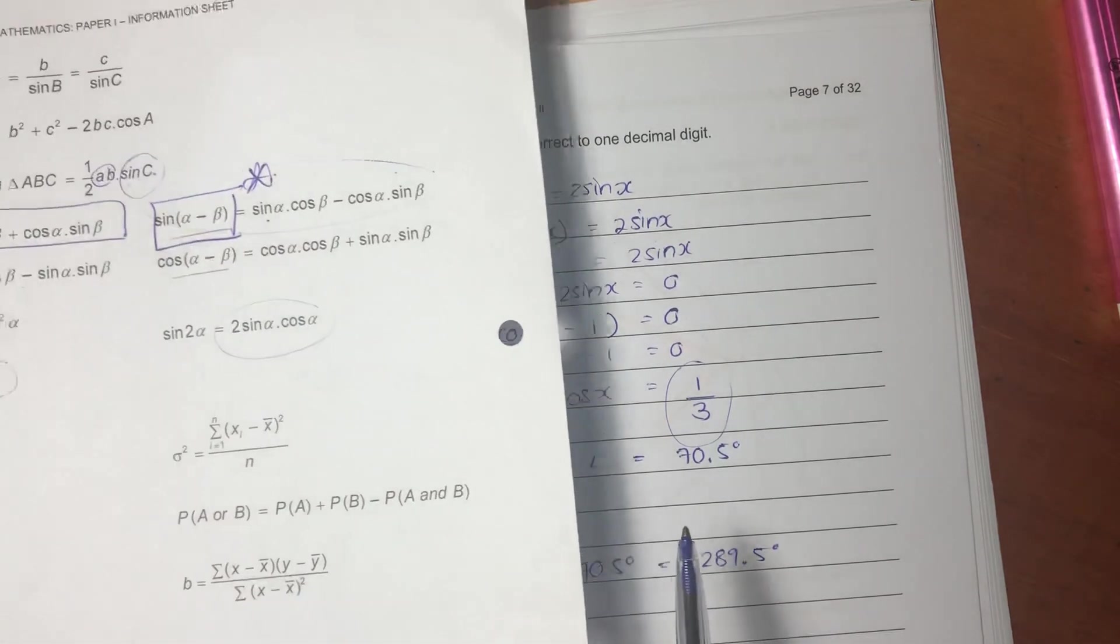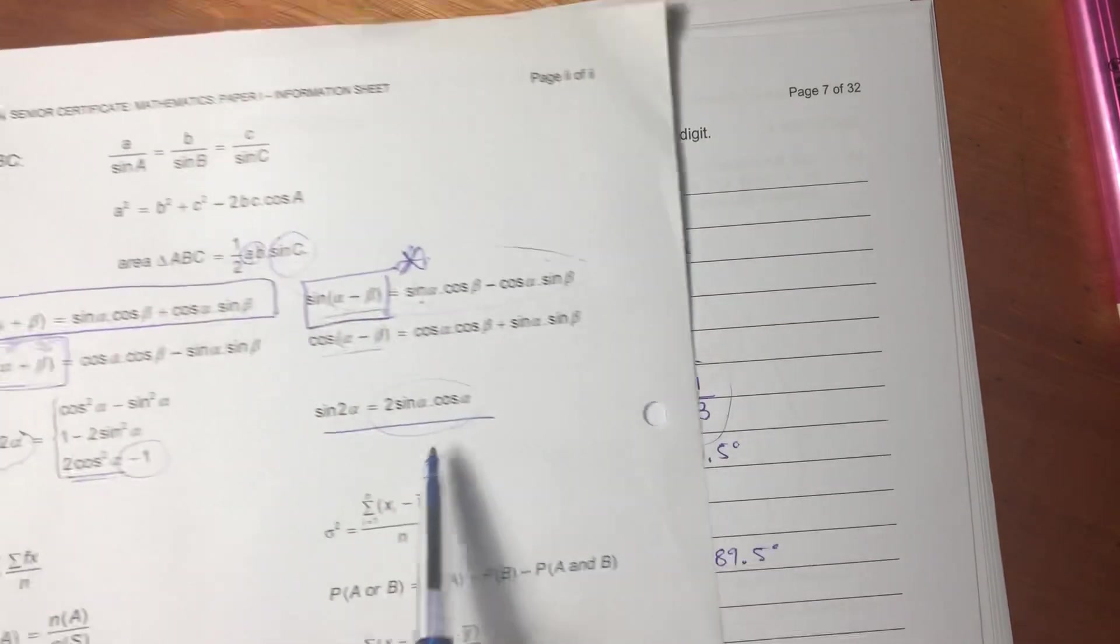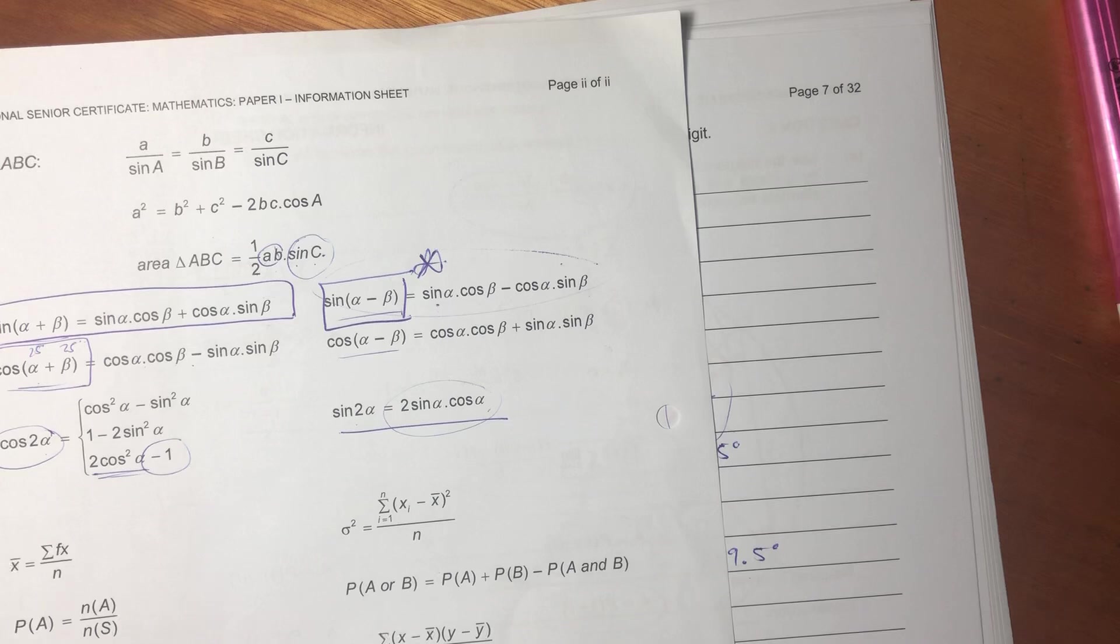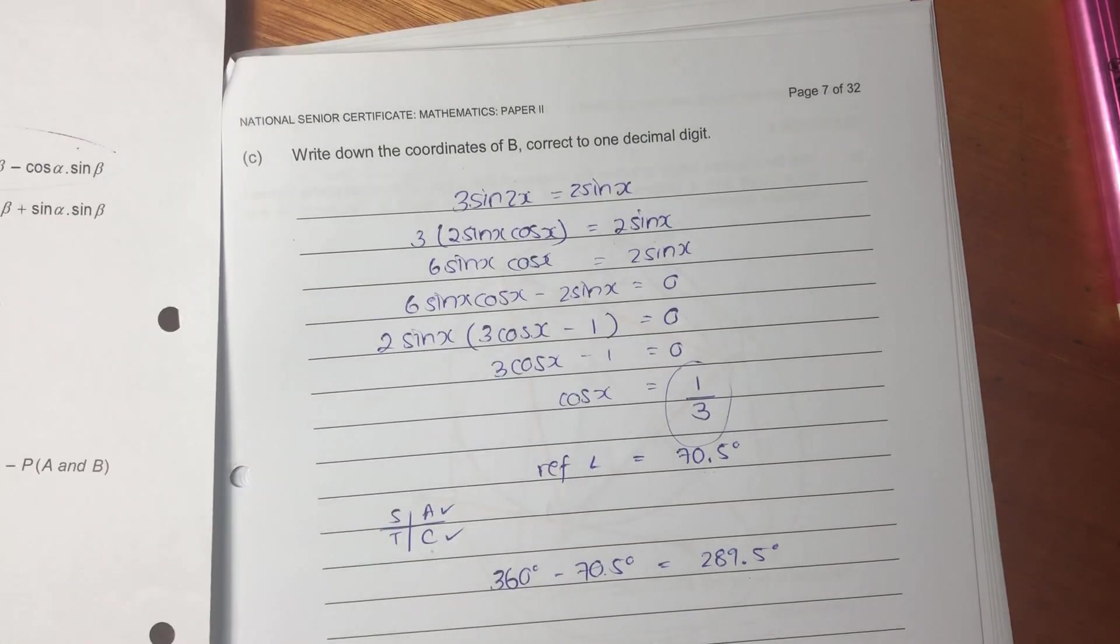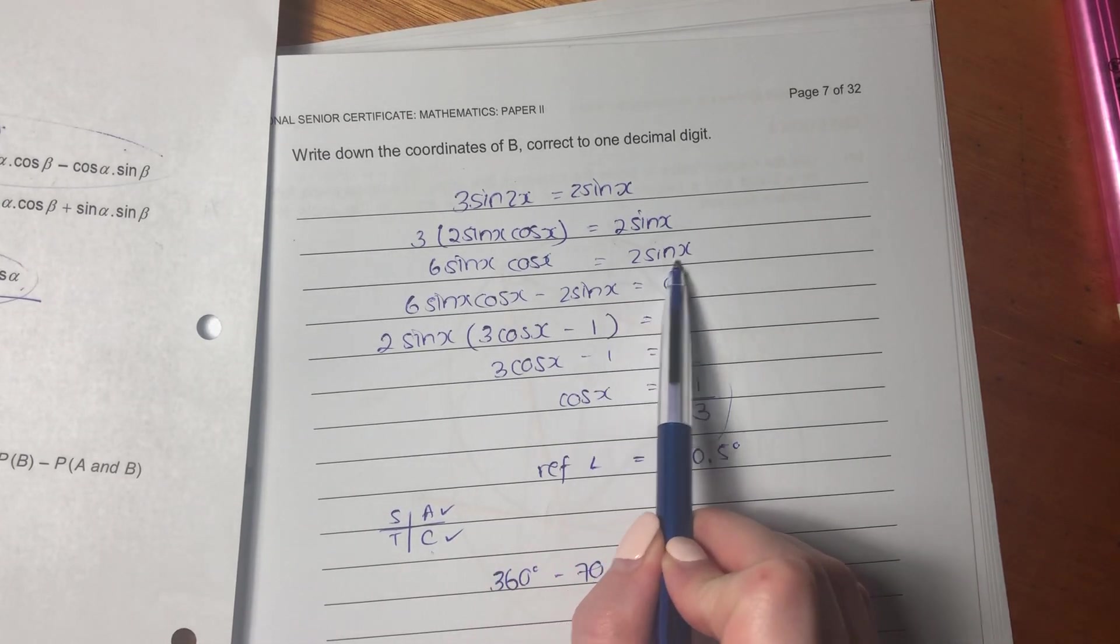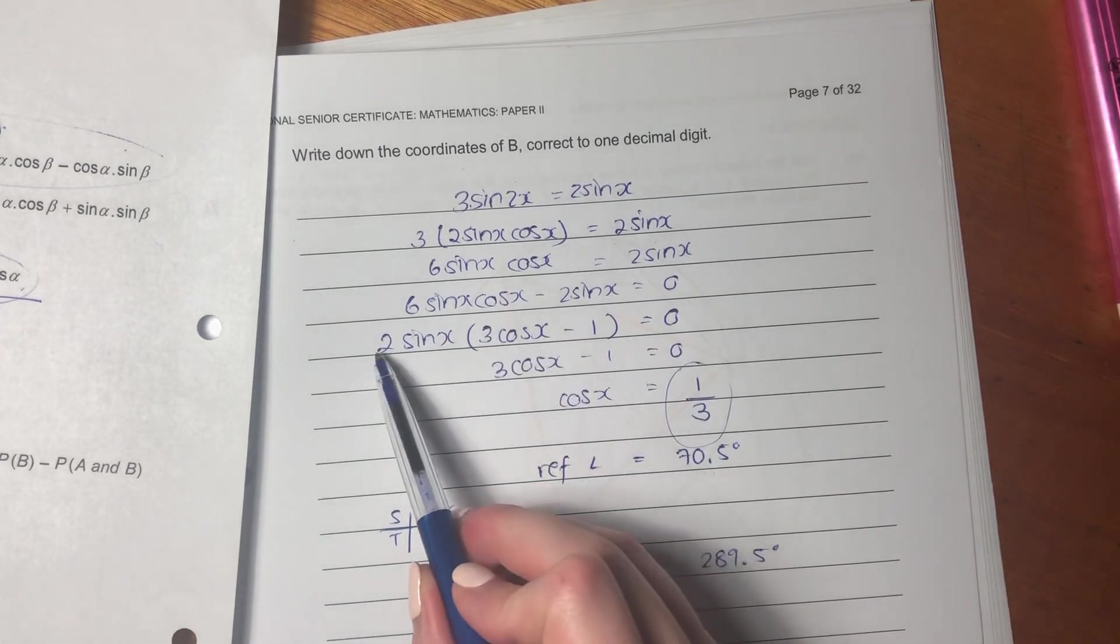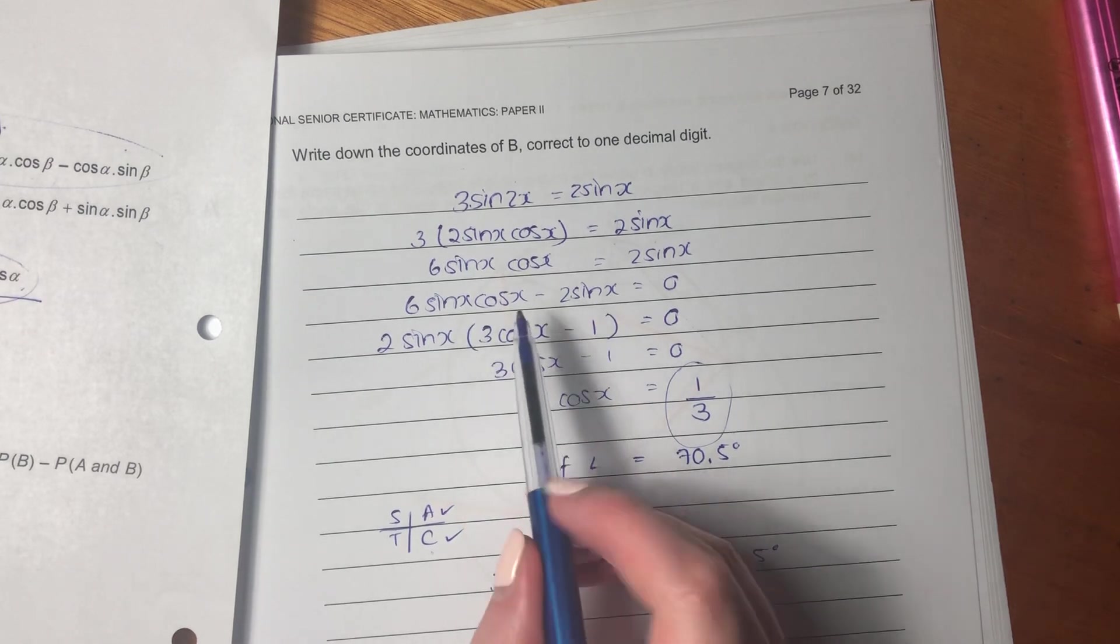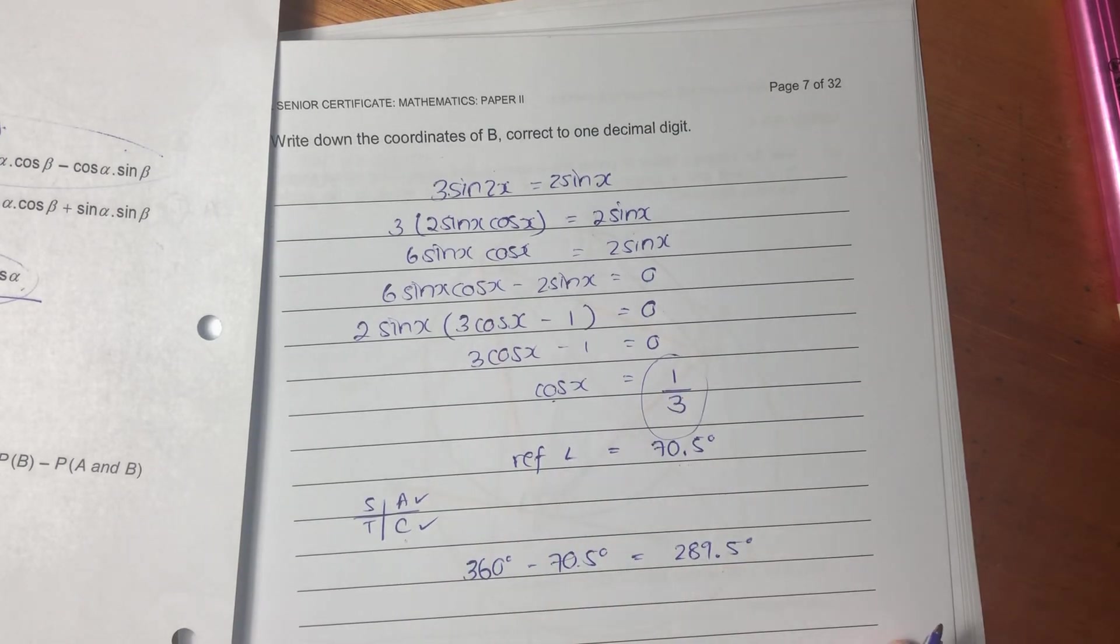So what I did is I said, let me go to my formula sheet and let me maybe use this formula here. Because I have this sine 2x and I'd like to manipulate it so that I can get a value for x so that I can get an answer. So it's not always easy knowing which identity to use. The best way to practice, to get good at this, it's just to practice. And sometimes then you'll just start seeing it. So what I did here, I put that in, got 6 sine x cos x equals 2 sine x. I brought it this side and did a little bit of factorization. Divided through by 2 sine x, and then I got cos x equals 1 over 3.